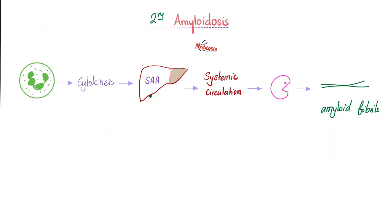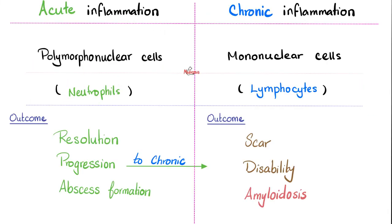So primary amyloidosis is the story of multiple myeloma. Secondary amyloidosis, on the other hand, is the story of any chronic inflammation. We have inflammation, so we have inflammatory cells — white blood cells releasing cytokines. Cytokines will knock on the door of the liver: 'Hey liver, can you please make the SAA precursor protein?' — serum amyloid associated protein — which will leave the liver and go into your circulation. Before you know it, the macrophages get activated and we will lay down and deposit this amyloid-associated protein, or AA protein. Remember: acute inflammation involves neutrophils and polymorphonuclear cells, but in chronic inflammation we're talking lymphocytes and plasma cells, which are mononuclear cells. The fate of acute inflammation is resolution, progression, or abscess formation. But the prognosis of chronic inflammation can end up with scar, fibrosis, disability, and amyloidosis.